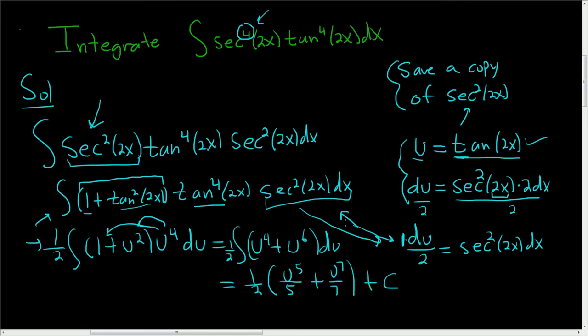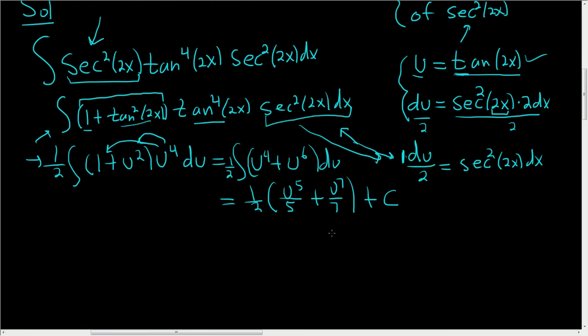The last step is to just plug in the tangent. So u was tangent 2x, so we're going to replace u with tangent 2x. So at the same time, let's multiply this. So this is 1 over 10 tangent to the fifth power of 2x plus 1 over 14 tangent to the seventh power of 2x, and then plus our arbitrary constant.